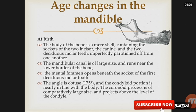The mandibular canal is of large size and runs near the lower border of the bone. The mental foramen opens beneath the socket of the first deciduous molar tooth. The angle is obtuse, 175 degrees, and the condyloid portion is nearly in line with the body. The coronoid process is of comparatively large size and projects above the level of the condyle.